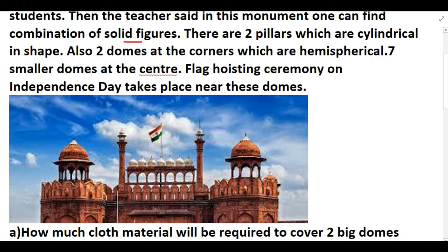So you can see two domes here of hemispherical shape, seven domes at the center: one, two, three, four, five, six, seven domes at the center also you can see. Then we can see there are two cylindrical pillars also at the center, cylindrical pillars we can see, which there are two pillars which are cylindrical in shape.